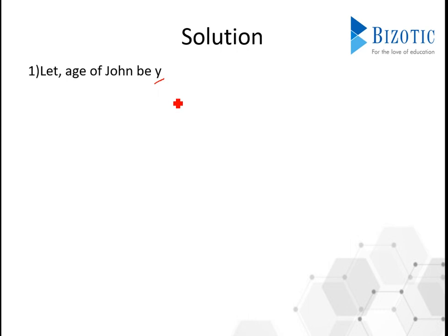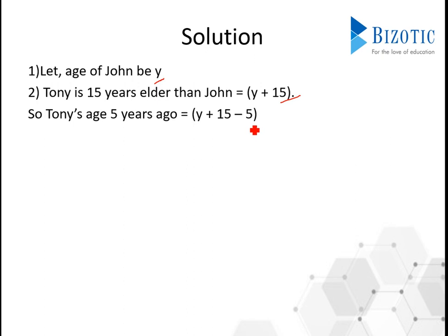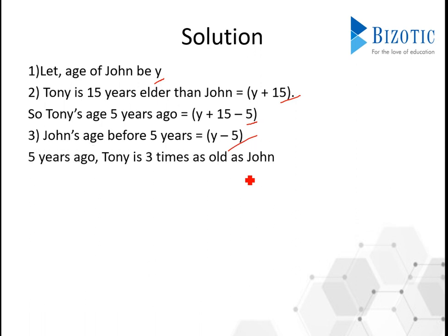If John's age is y, and Tony is 15 years elder than John, that will make Tony's age y plus 15. Continuing with the question, 5 years ago Tony was 3 times elder than John. To get that equation, we need Tony's age and John's age 5 years ago. Whenever it comes to 'ago', you subtract the age. So Tony's age will become y plus 15 minus 5, and John's age y minus 5. Now we have the equation: 5 years ago, Tony is 3 times as old as John, so Tony's age equals 3 times John's age.